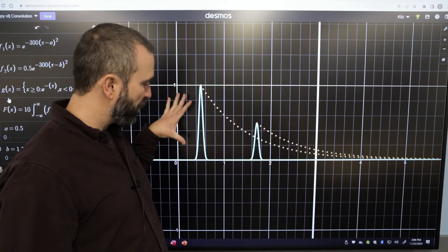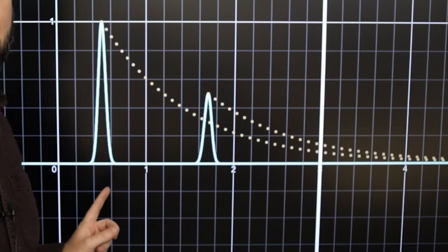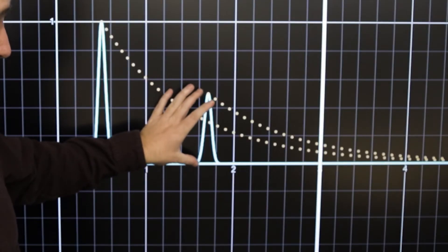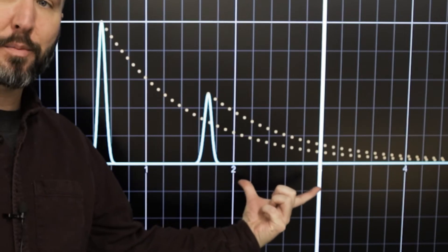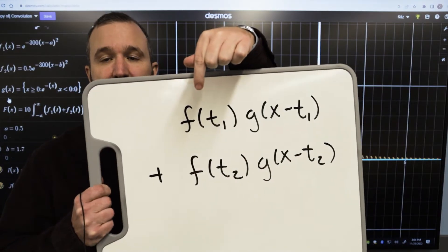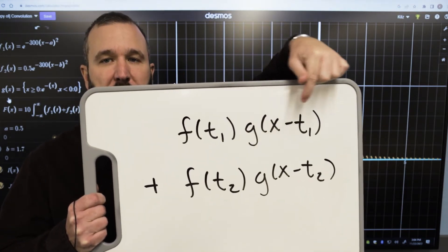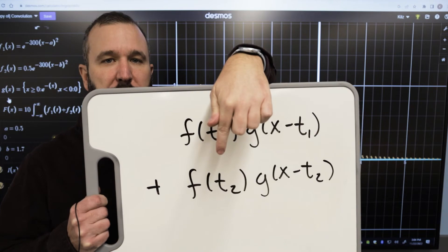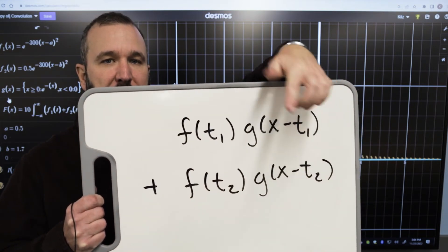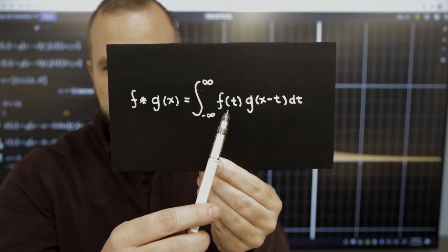Now let's try to figure out the strength of the signal assuming that there were two impulses. Figure out how strong the impulse was at time 1, scaled down by the amount of time that has elapsed since time 1, plus the strength of the signal at time 2, scaled down by the amount of time that's elapsed since time 2. Add up all of the impulses at time T, scaled down by the amount of time that has elapsed.